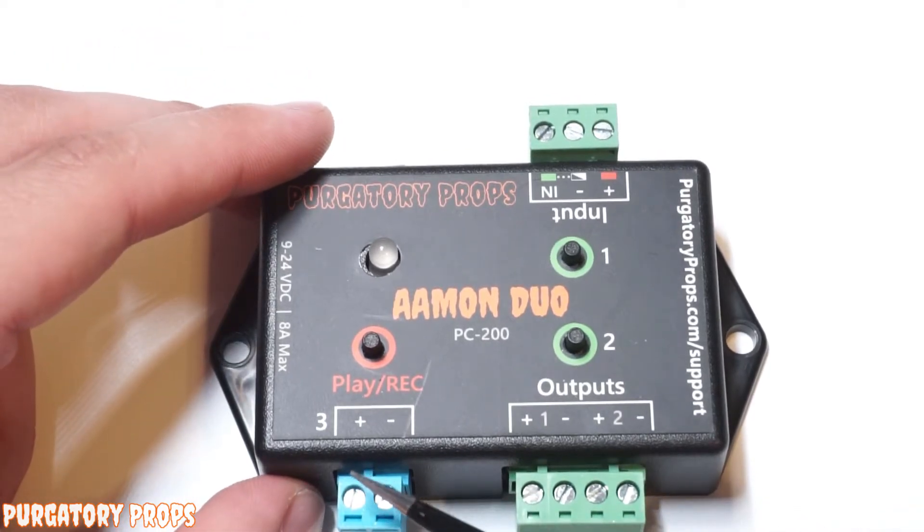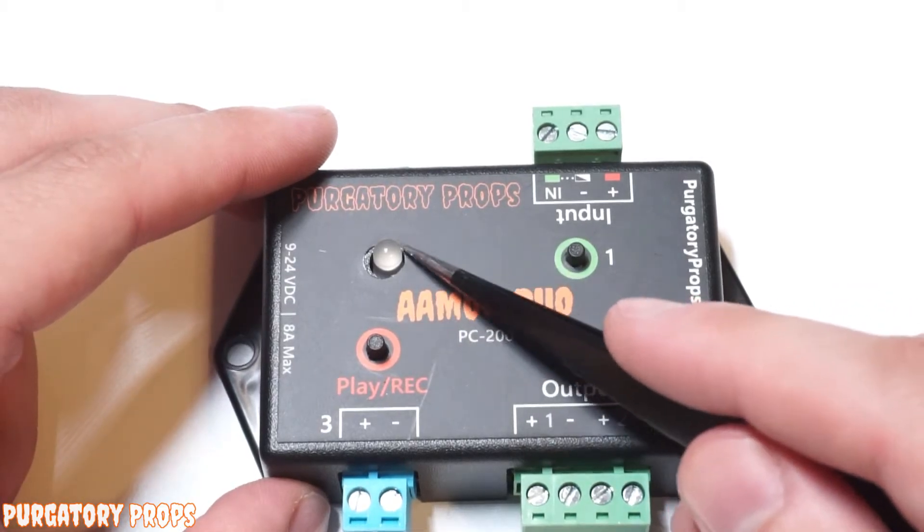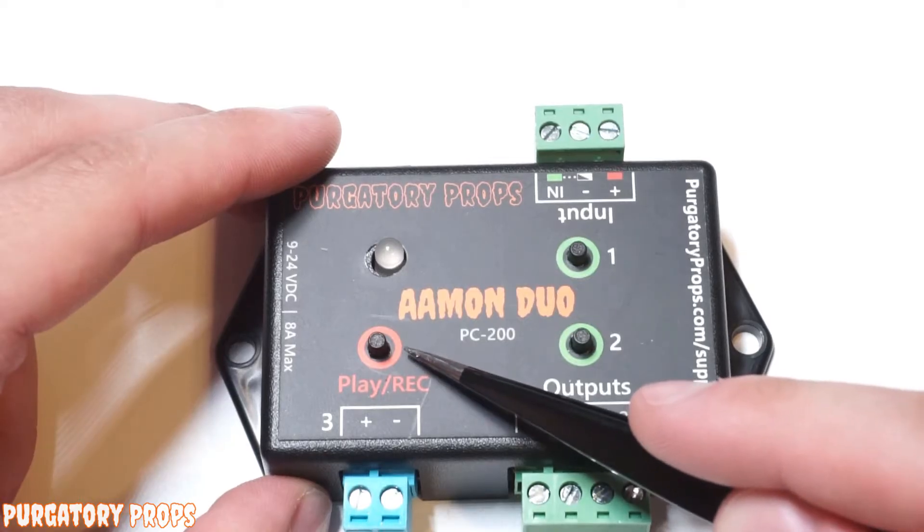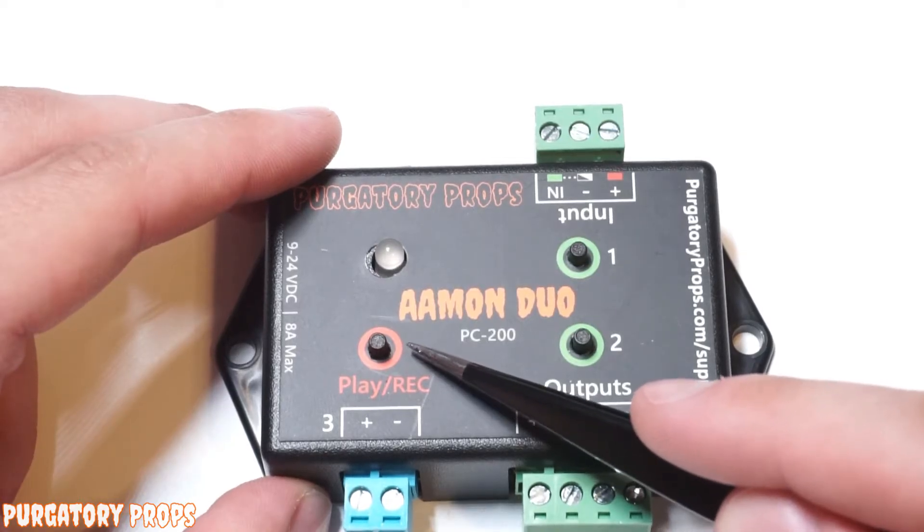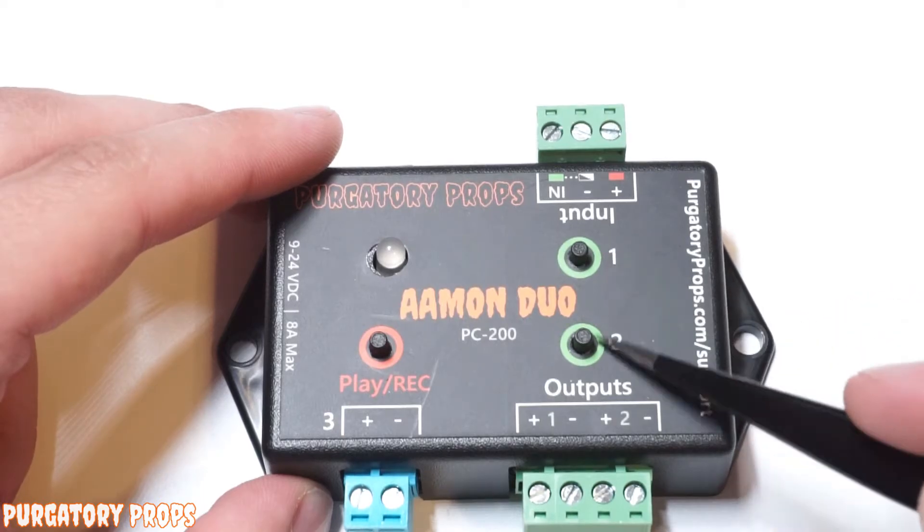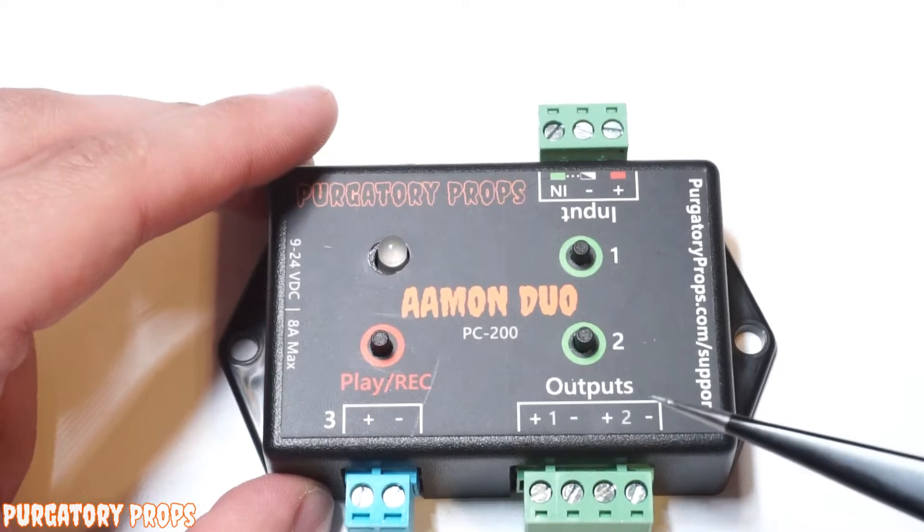And over here, we have that special third output. And then on the top here, we have a status LED, and then the play record button. This is used to either play your animation or record it. Then over here, we have buttons one and two, and those are used to control outputs one and two when you're recording.